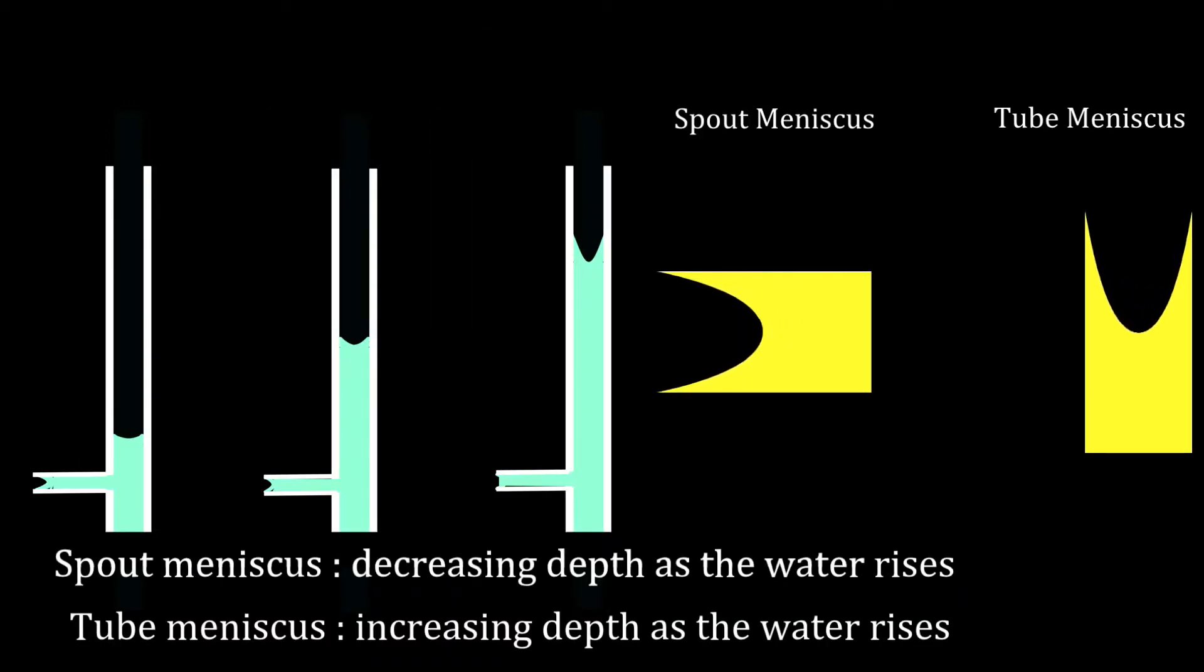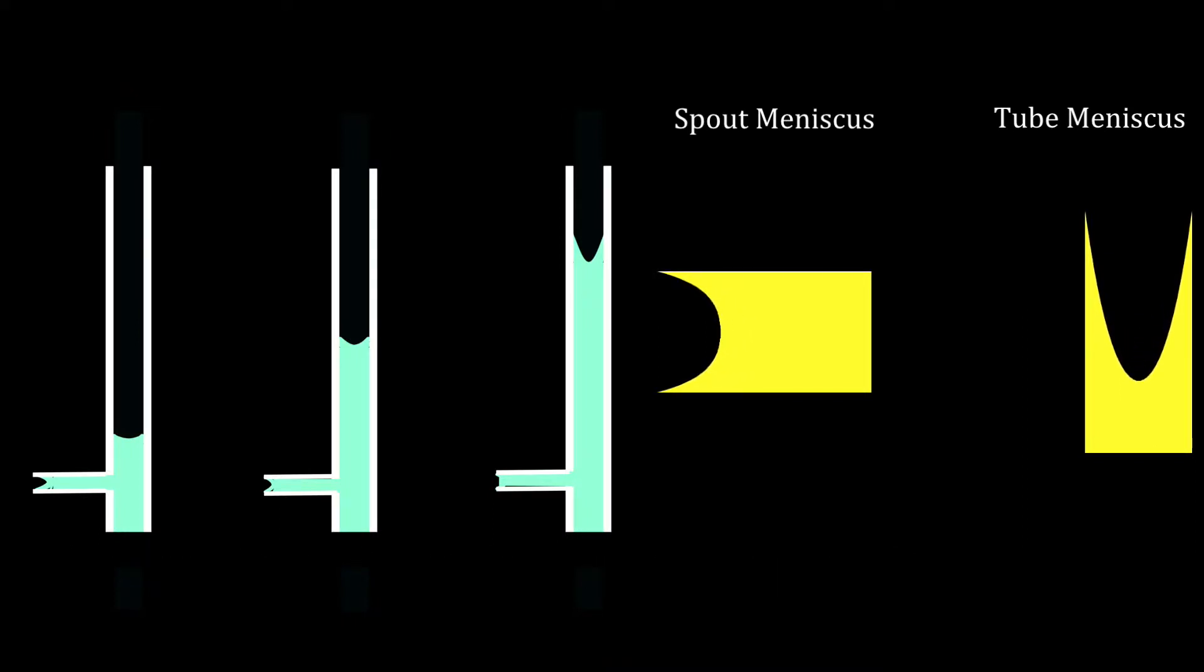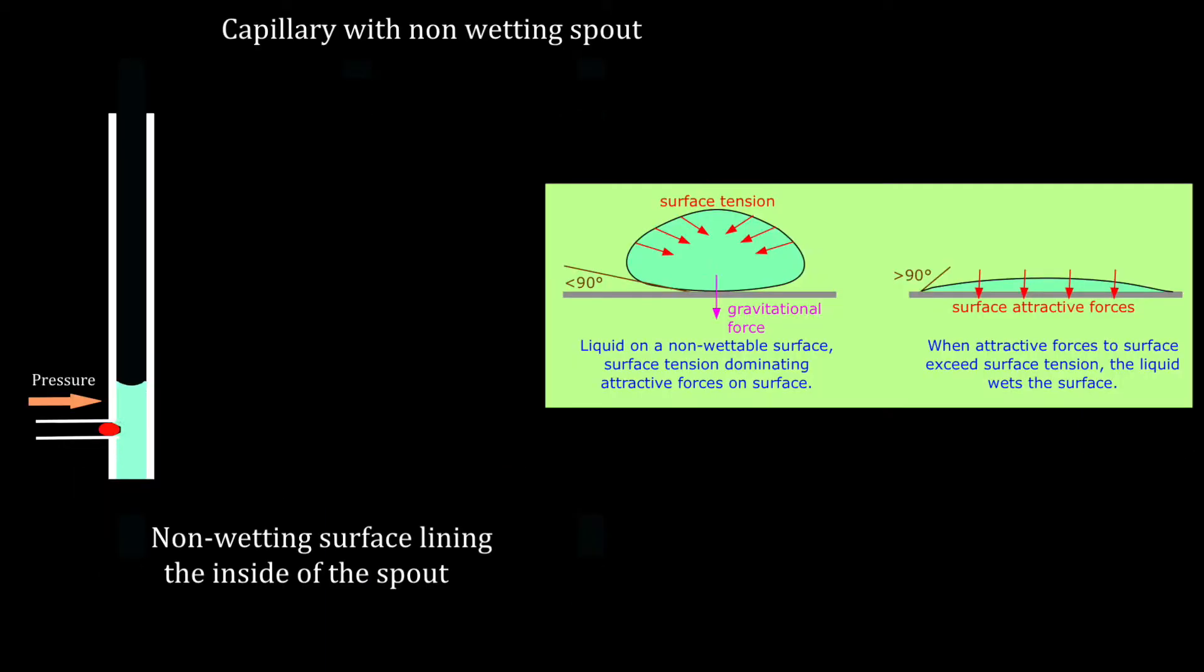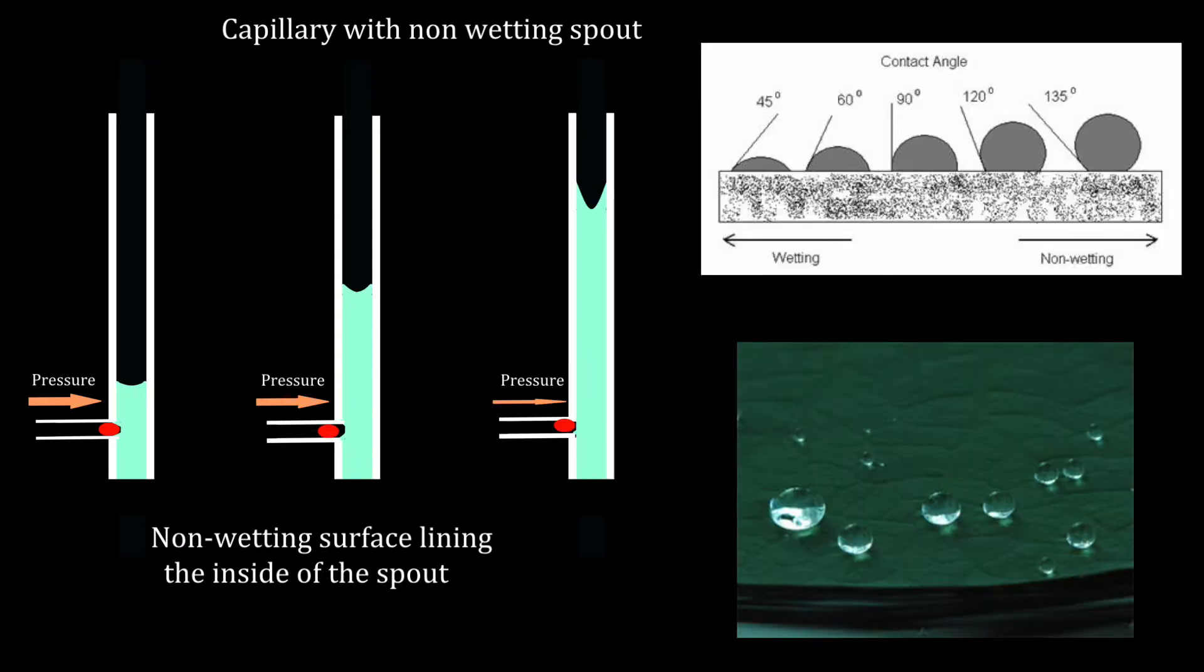What if we add a spout? The first prediction is that the height of the meniscus in the spout diminishes and the height of the meniscus in the tube increases as the water rises. What if we add a non-wetting spout? Predict that if the spout is blocked, the meniscus will sit inside the capillary tube.